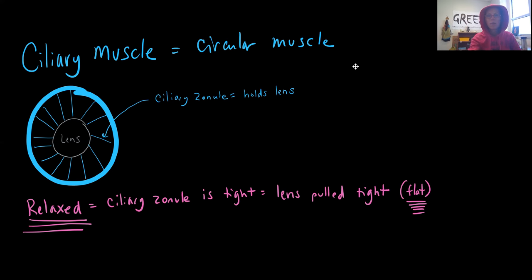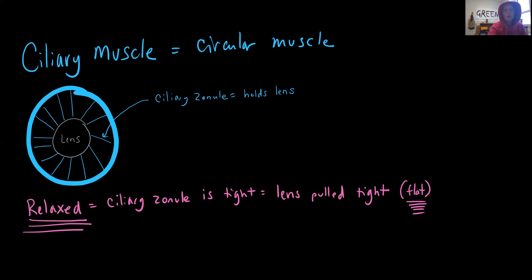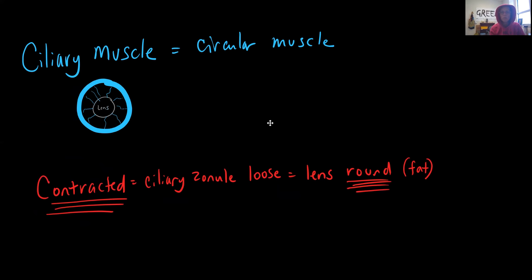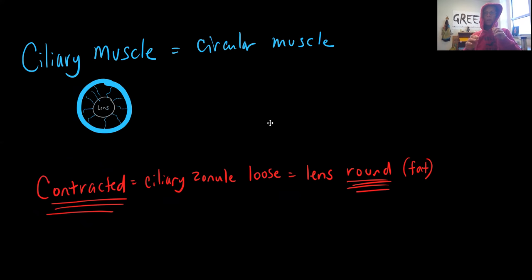Now let's see what happens when our muscle is contracted. When that ciliary muscle contracts, it's going to be like me pulling on the strings of my hoodie, get smaller, right? So that muscle is getting super up close to the lens, right?